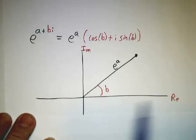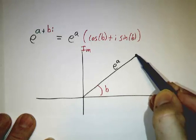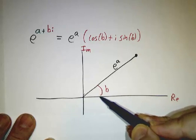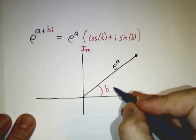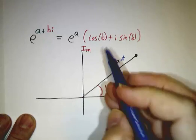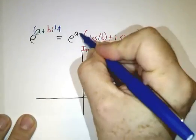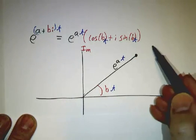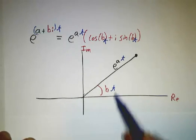And the picture of this is pretty straightforward. You draw the complex plane with the real axis and the imaginary axis. And you get a number, complex number, whose magnitude is e to the a and whose argument is b. And if you have e to the zt, you have something whose magnitude grows exponentially and whose argument goes around and around and around with rate t.